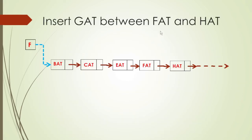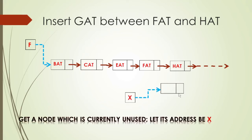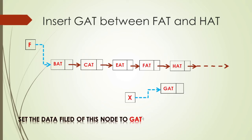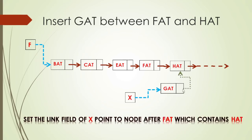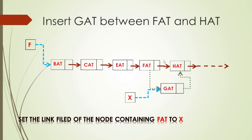Similarly, to insert a node between 'fat' and 'hat': we get a currently unused node with address x. We set the data field, then set the link field of node x to point to 'hat'. Then we set the link field of the node containing 'fat' to x. This way, 'fat' now points to x, and x points to 'hat'. The old direct connection from 'fat' to 'hat' is automatically no longer valid.